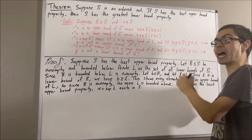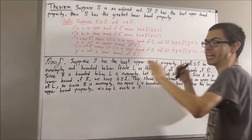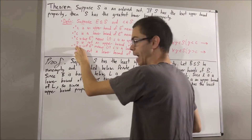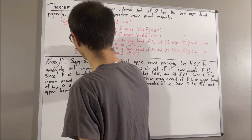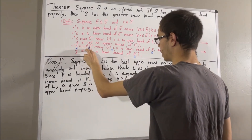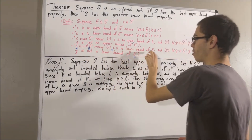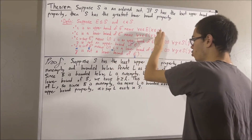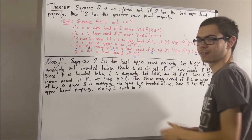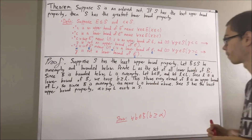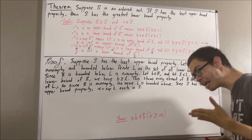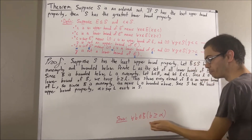And continuing with our plan, our goal is to show that alpha is the infimum of B. So, to show that alpha is the infimum of B, we're first going to show that alpha is a lower bound of B. And by definition of lower bound, this means we want to show for all B in B, B is greater than or equal to alpha. Now, this is the same thing as saying for all B in S, if B is an element of B, then B is greater than or equal to alpha. Since we're trying to prove a statement about every element in S, let's give ourselves an arbitrary element of S.